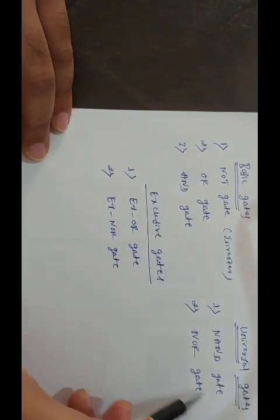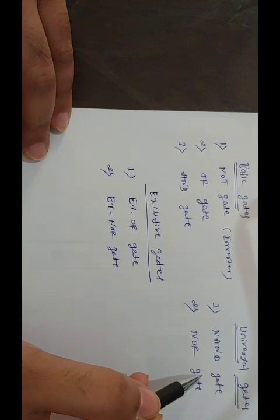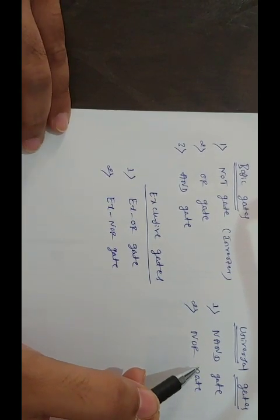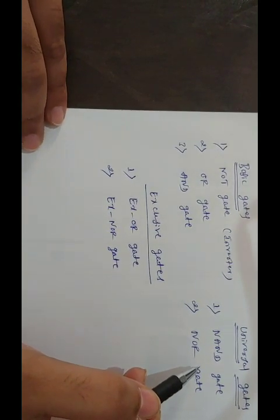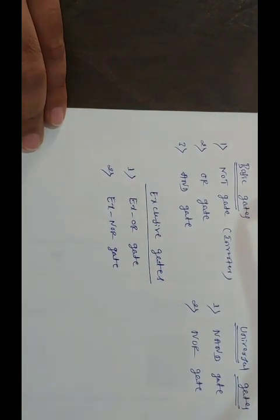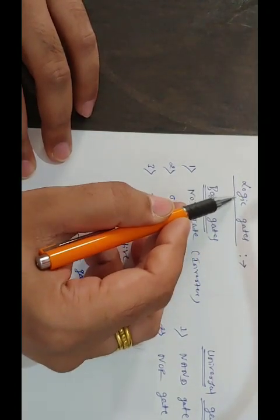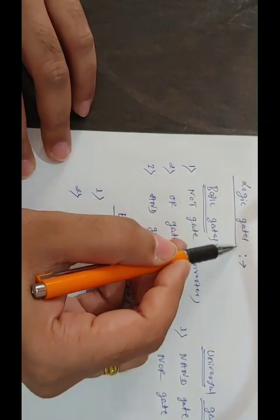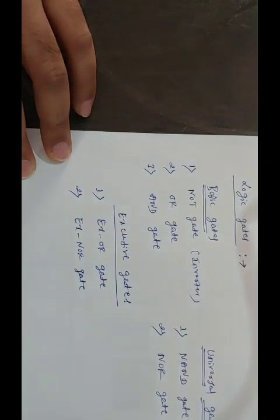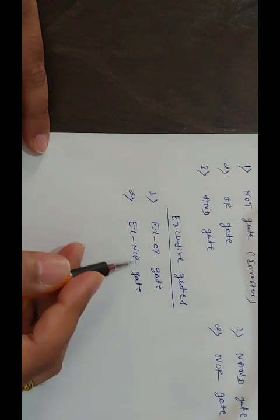If you take all these gates, the output of this gate is only one - a single output, either it may be logic zero or it may be logic high. Now the term logic is referred as a decision making process.